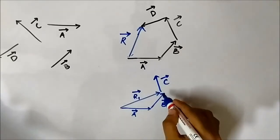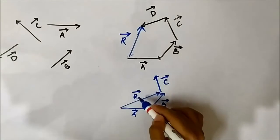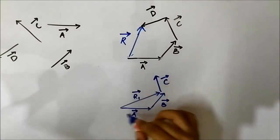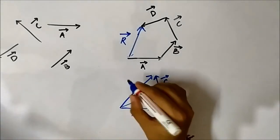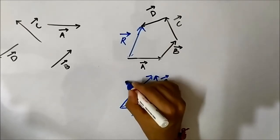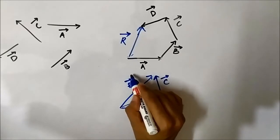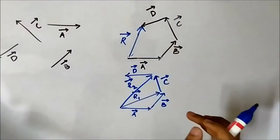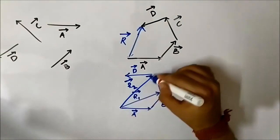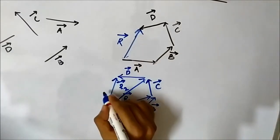Now draw the c vector so that its tail starts from the head of the resultant R1 of a and b. Consider R1 vector and c vector and apply the triangle law — the resultant will be R2. Then draw the d vector from the head of R2. Now consider R2 vector and d vector, and applying the triangle law gives us the final resultant vector R.